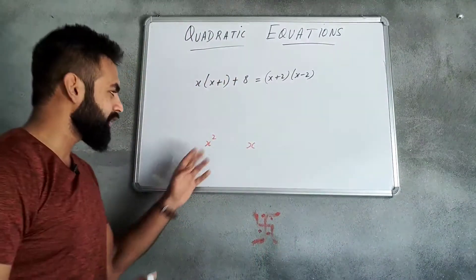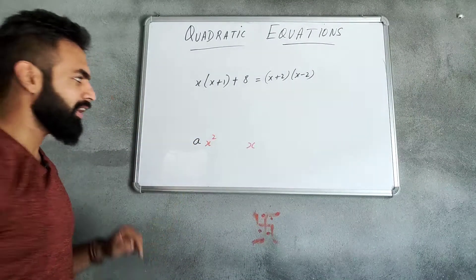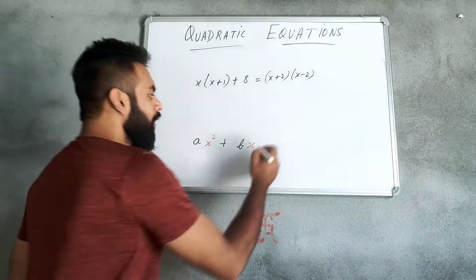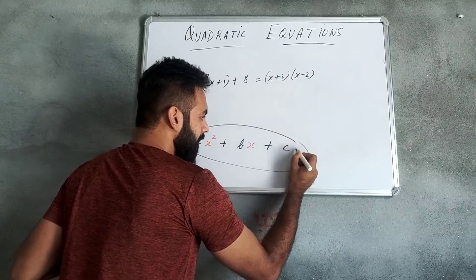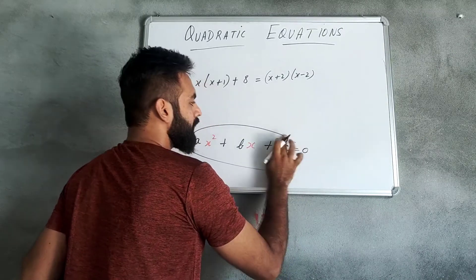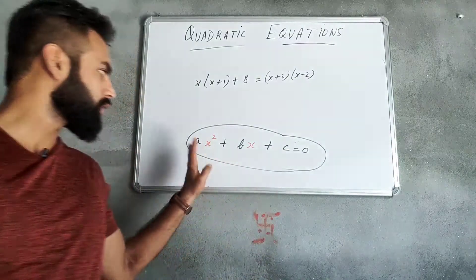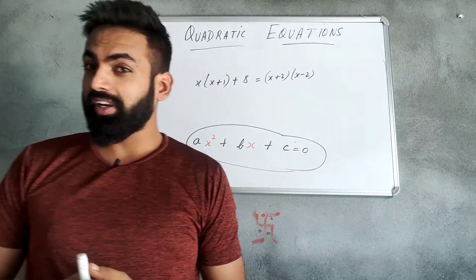You can have an x-square term present. I consider the coefficient a of x-square here. There will be an x-square term present, the coefficient b, and a constant term c present. And this, when equated to 0, when we put it equal to 0, we call this equation a quadratic equation. ax² + bx + c = 0 is the general form of a quadratic equation.